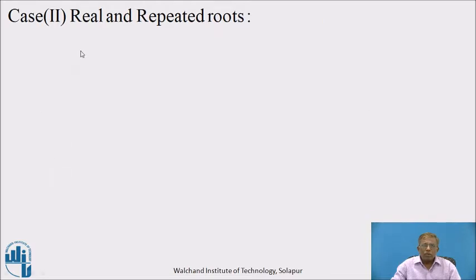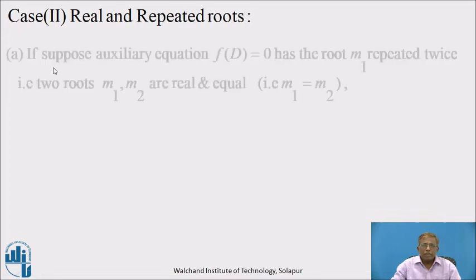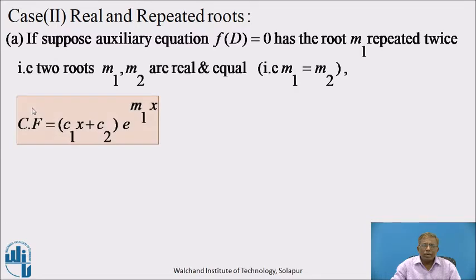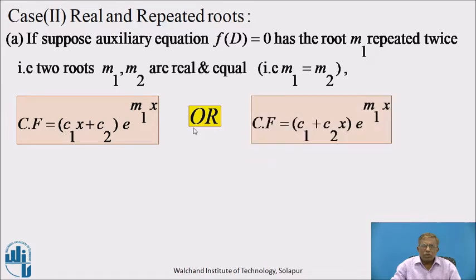Case 2 — sometimes the roots may be real and repeated. Point A: if the auxiliary equation f(D) = 0 has root m₁ repeated twice, meaning m₁ = m₂, then we choose two constants c1 and c2. When the roots are equal, arrange c1 and c2 in a bracket: CF = (c₁x + c₂)e^(m₁x), or equivalently CF = (c₁ + c₂x)e^(m₁x). Both forms are correct.